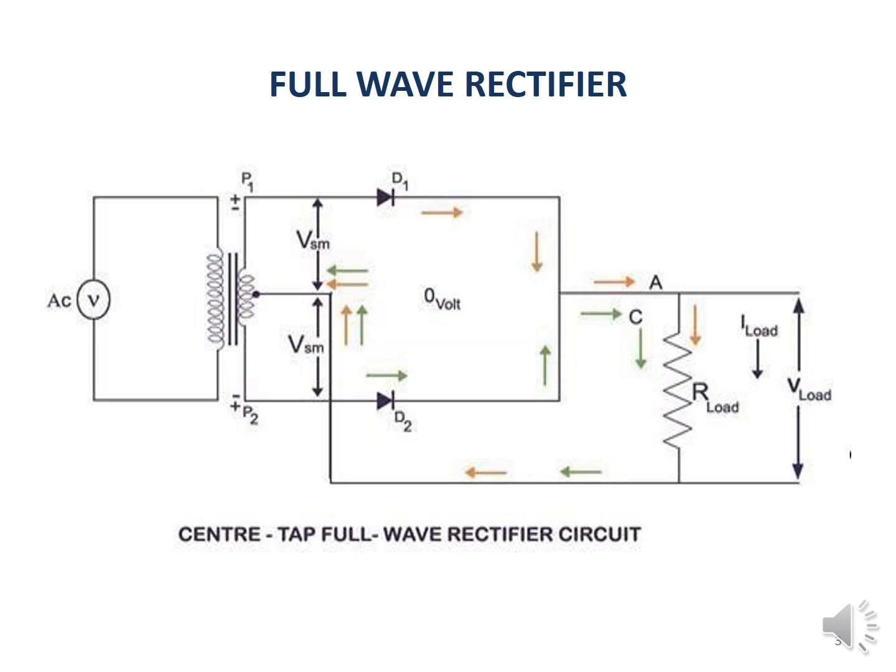It is an uncontrolled rectifier. Diodes D1 and D2 are connected at each end of the secondary of this transformer. The load is a resistive load connected across the output.